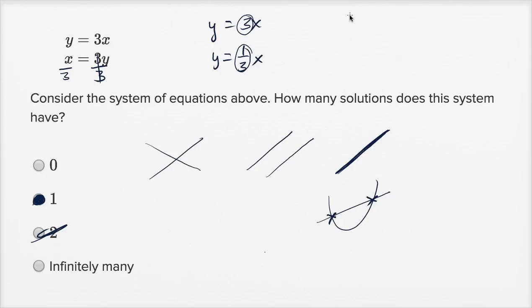And if you wanted to visualize this on the coordinate axes, I'll do it really fast. If that's our y-axis, this is our x-axis. This first line is going to have a slope of 3, so it's going to be a pretty steep line. It's going to look something like this.